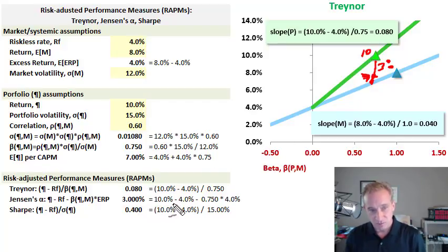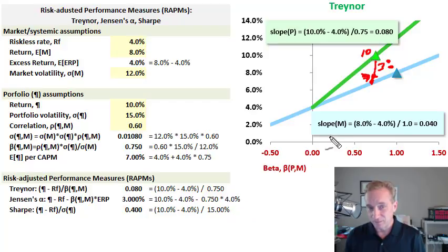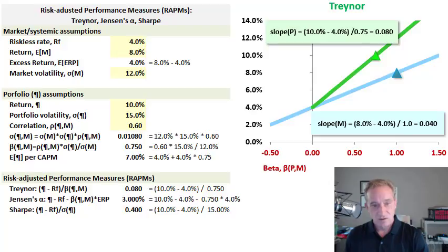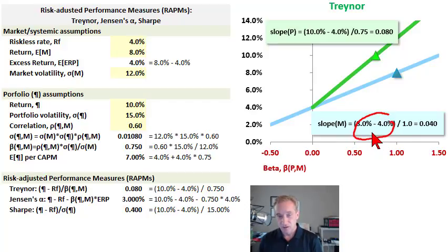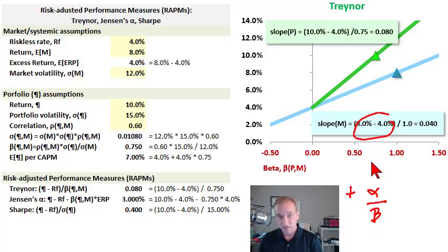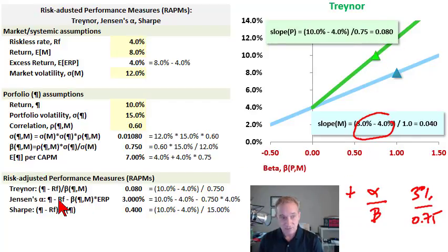We have 3% outperformance. Jensen's Alpha is simply portfolio return minus the risk-free rate minus beta times the equity risk premium—a rearrangement of CAPM backing out any residual. It can also be negative. The Traynor ratio is directly related: it equals the equity risk premium plus alpha divided by beta. Here, 3% alpha divided by beta 0.75 gives 4%, and adding the equity risk premium of 4% gives the Traynor of 8% (or 0.08). That's the relationship between Traynor and Jensen's Alpha.